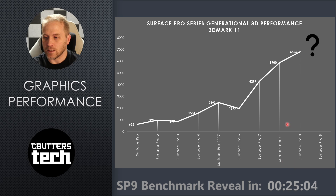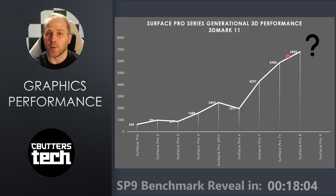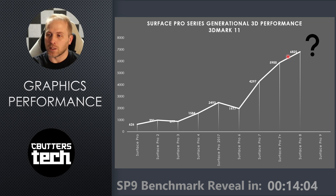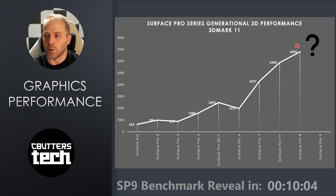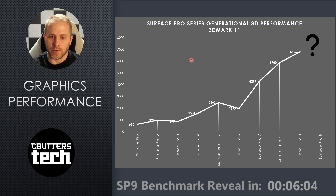That was Tiger Lake, which brought us to 5,900 on 3DMark 11. Surface Pro 8, with refinements in the chassis and the ability to push higher watts, brought us up to 6,825 for the 3DMark 11 score. Now let's look at the actual Surface Pro 9 performance.